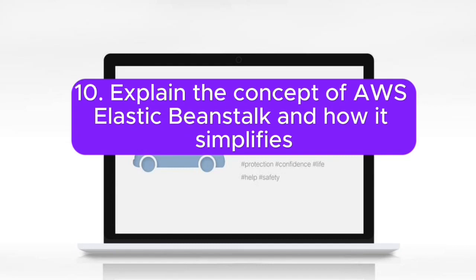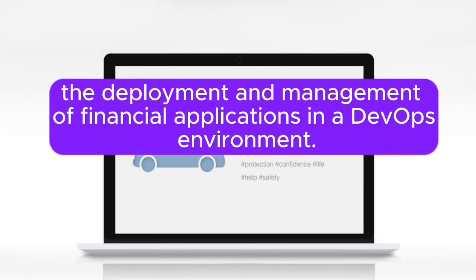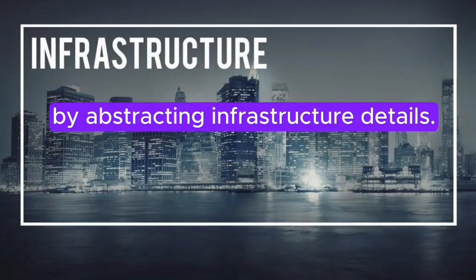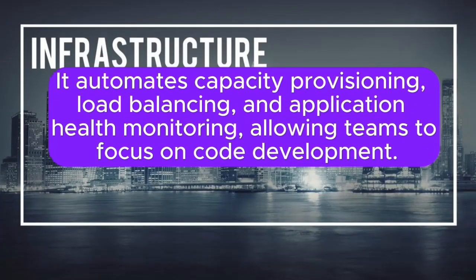Question 10: Explain the concept of AWS Elastic Beanstalk and how it simplifies the deployment and management of financial applications in a DevOps environment. Answer: AWS Elastic Beanstalk simplifies the deployment and management of financial applications by abstracting infrastructure details. It automates capacity provisioning, load balancing, and application health monitoring, allowing teams to focus on code development.